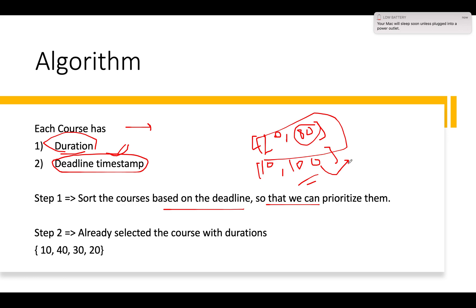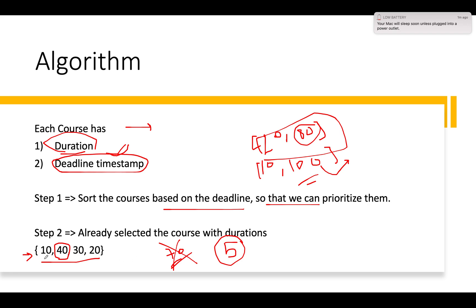The second insight: assume we've already selected four courses with durations 10, 40, 30, and 20. If a new course has duration 70, we would not replace any existing course because 70 is higher than the maximum duration among selected courses. However, if a new course has duration 5, we'd replace the course with the maximum duration — 40 — with the new course of duration 5.